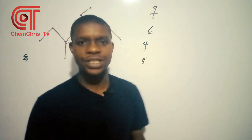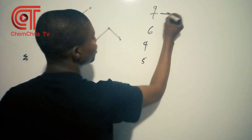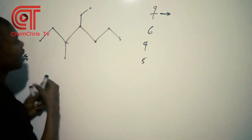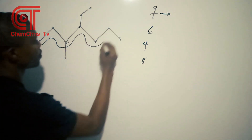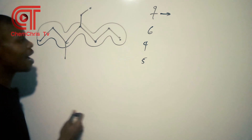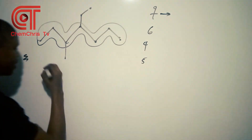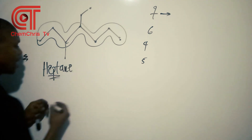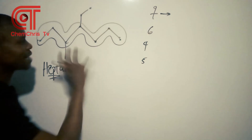Take the longest of these carbon chains and name it as the parent chain. Because 7 is the highest, that is my parent chain. And the 7th member of the alkane family is heptane.